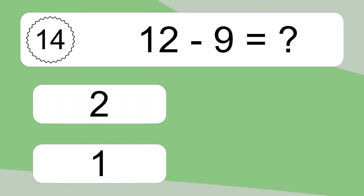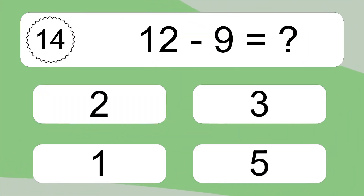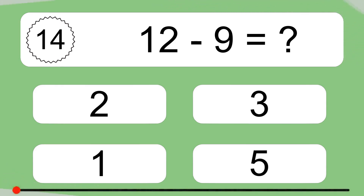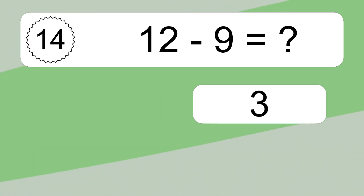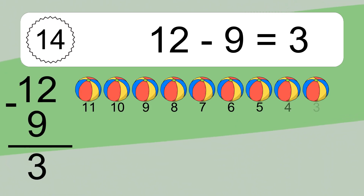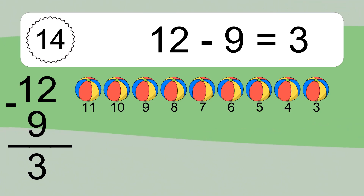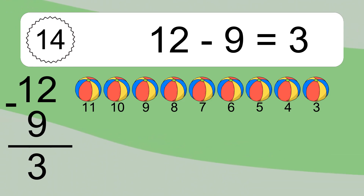12 minus 9 equals what? 12 minus 9 equals 3. Let's count it: 11, 10, 9, 8, 7, 6, 5, 4, 3.